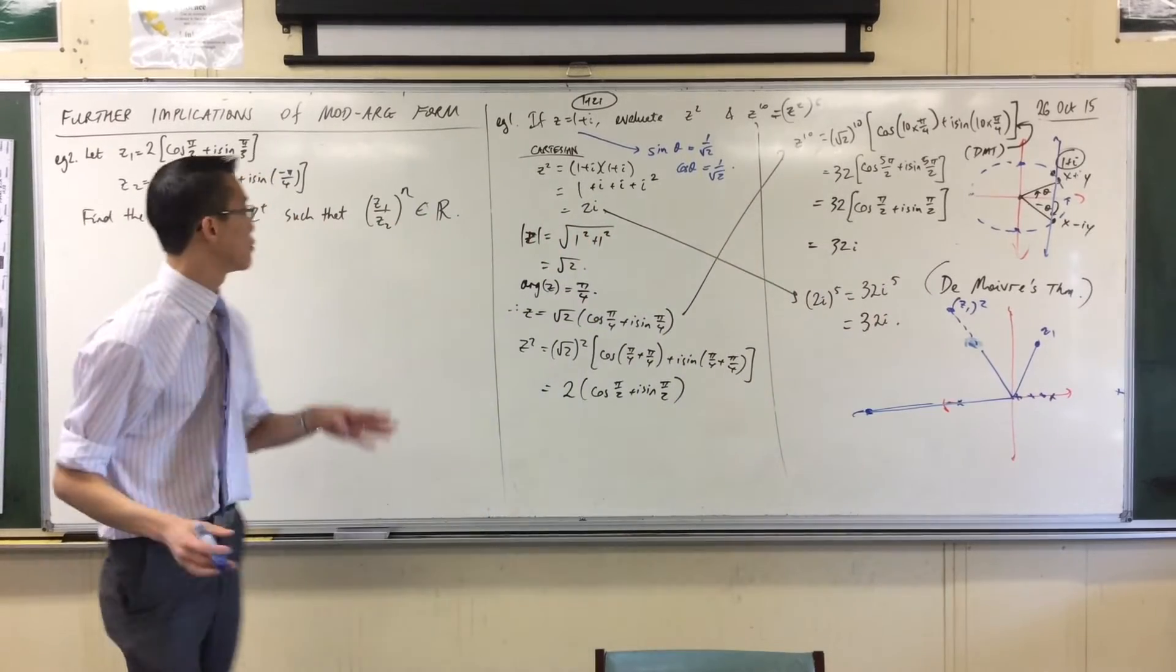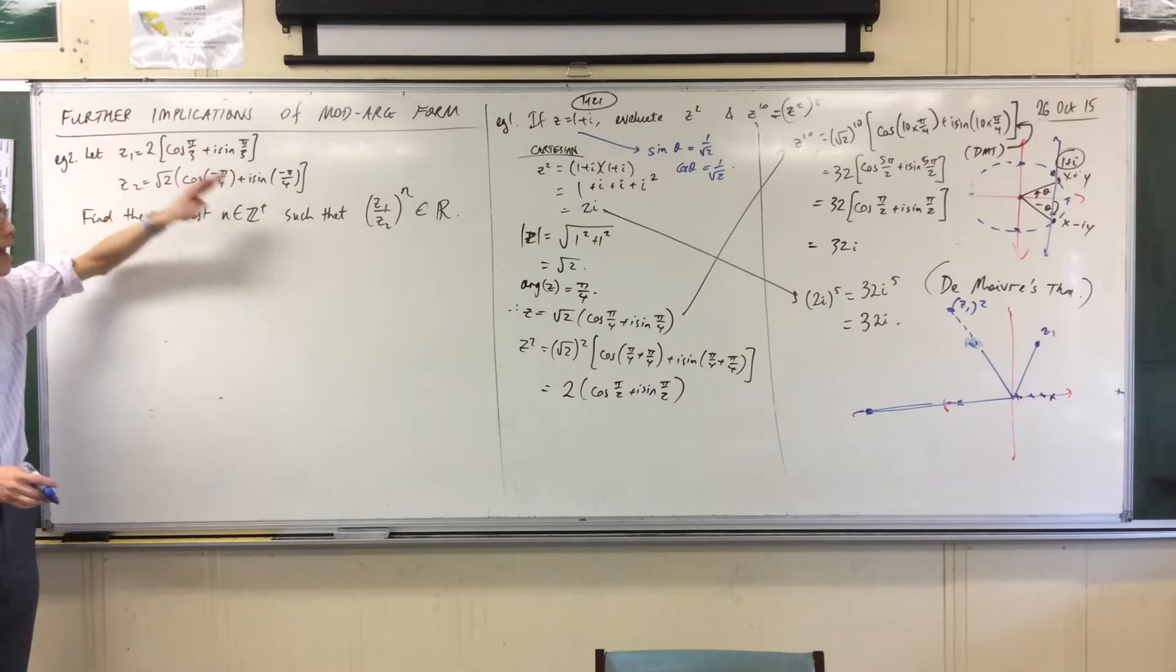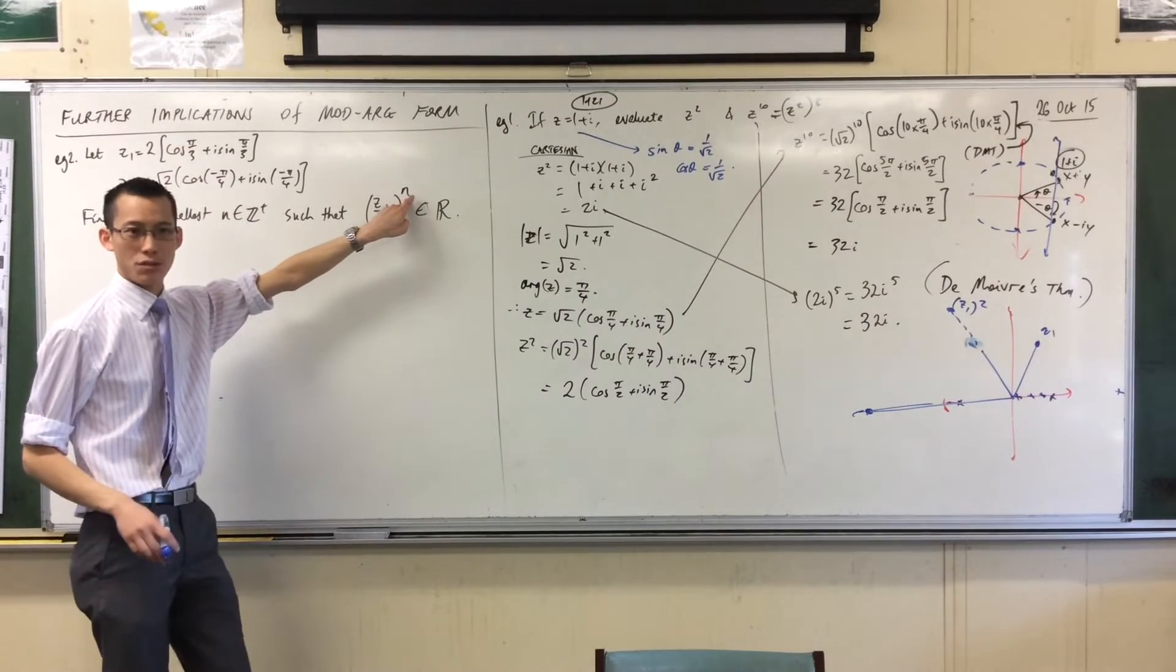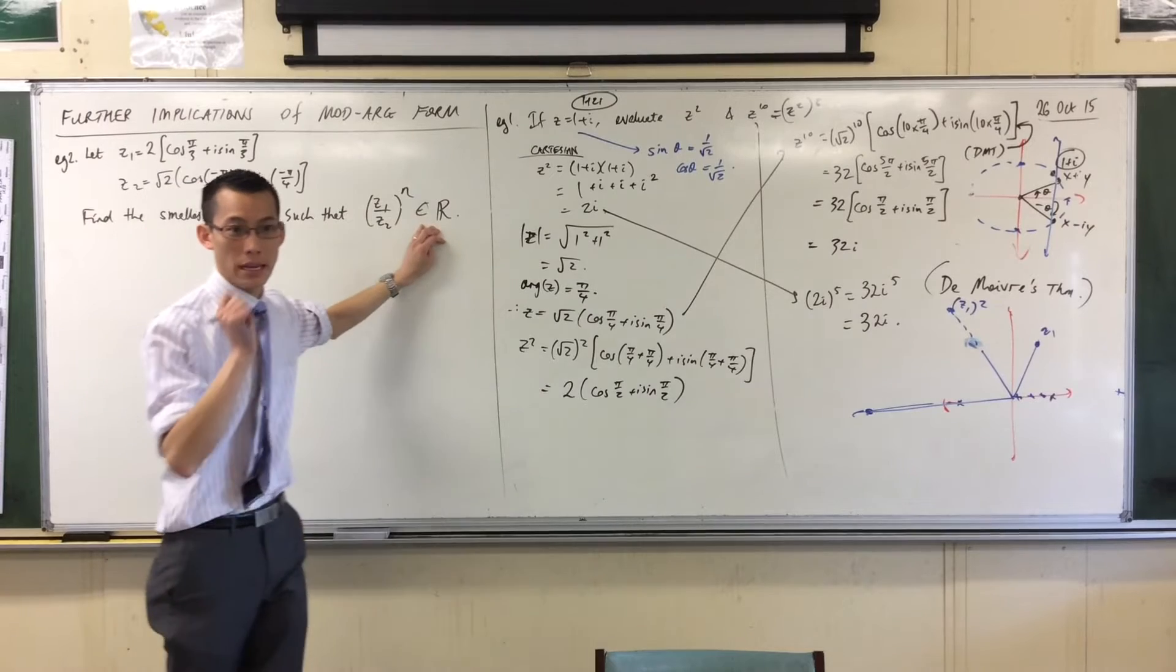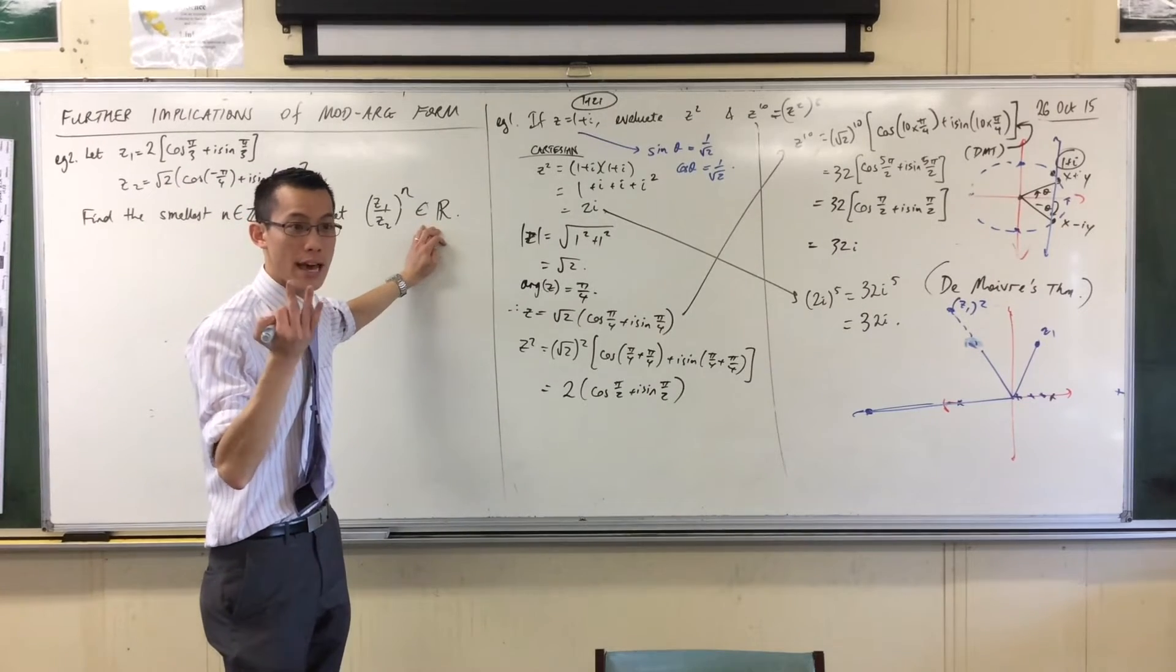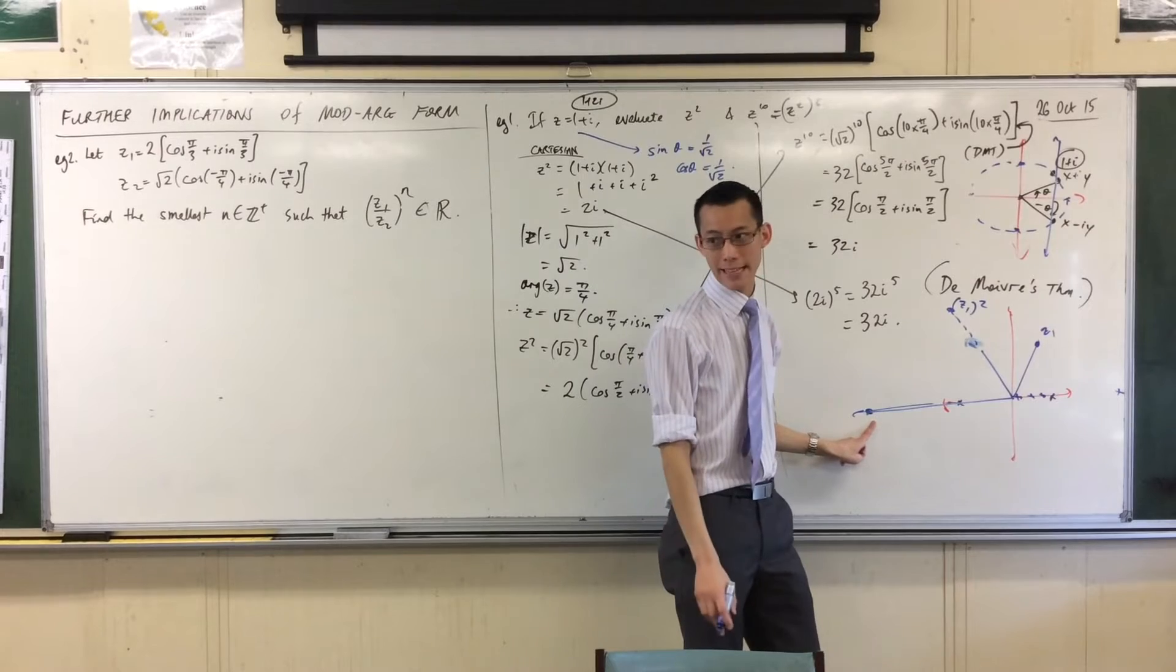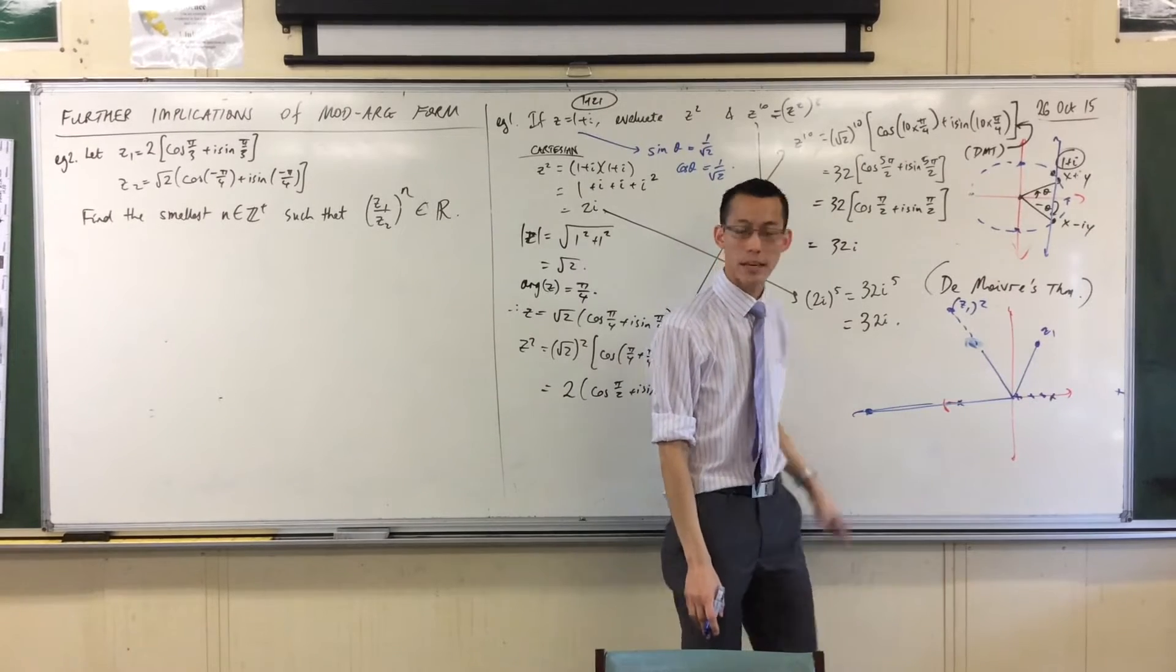So, if all I had was just z1, and I said, what power do you want me to raise you to, such that you end up with a wholly real number? The answer would be 3. Do you agree with that? Like, after the third time, I get back onto the real axis. So, that number is wholly real.